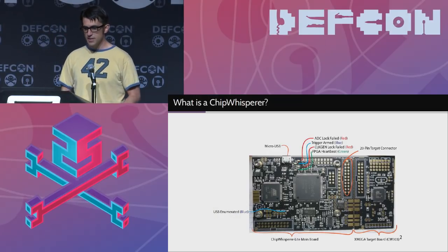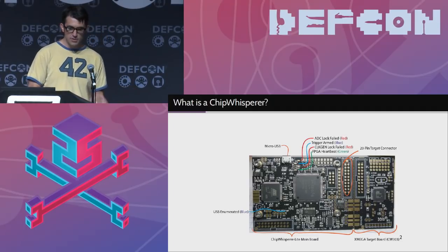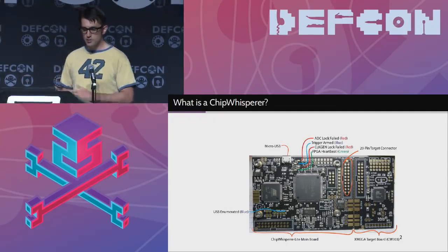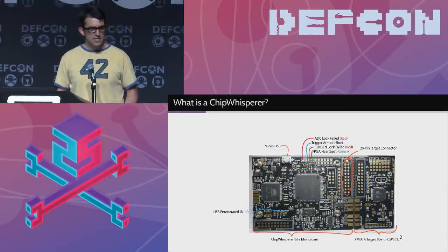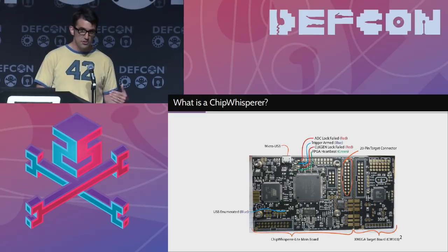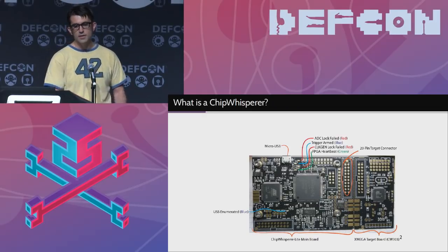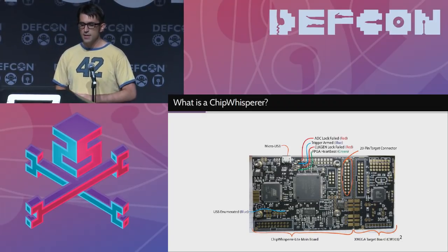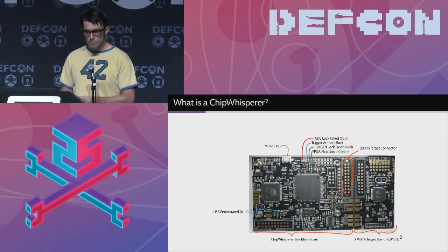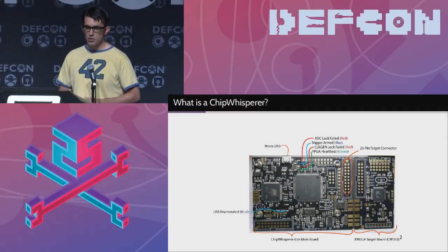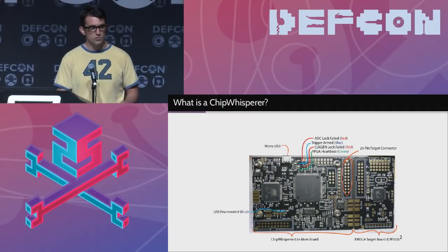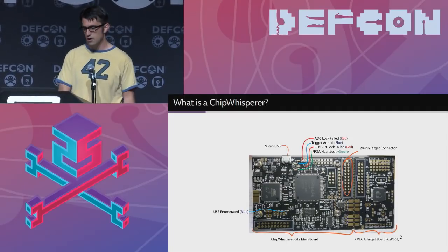The last background topic is the ChipWhisperer, which is what we used for this talk. It's essentially an FPGA with hardware designed to do fault attacks. It also does side channel analysis like power analysis and differential power analysis, but we focused on fault attacks. There's a lot of information on the ChipWhisperer wiki. It's the tool we used to insert the faults onto the hardware wallets.